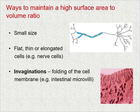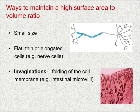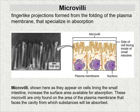There are a few ways cells maintain a high surface area to volume ratio. First, by maintaining a small size. Second, by maintaining flat, thin, or elongated cells such as nerve cells, which are extremely thin but branch far in long thin filaments. Third, by creating folds or invaginations of the cell membrane — for example, intestinal microvilli. Microvilli are finger-like projections formed from folding of the plasma membrane, specializing in absorption such as the absorption of nutrients in the intestine. They face the cavity of the intestine and aid in absorption because of their much higher surface area.